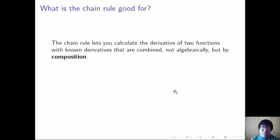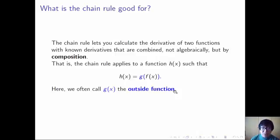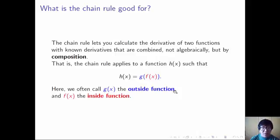Alright, but what is the chain rule good for? The chain rule lets you calculate the derivative of two functions that aren't combined algebraically, but by composition — that is, by sticking one function inside the other. If you have a function h of x such that h of x equals g of f of x, that's where you can use the chain rule, if you already know the derivatives of f and g. Often you call g of x the outside function and f of x the inside function. We'll try to be consistent about having the outside function in blue and the inside function in red.